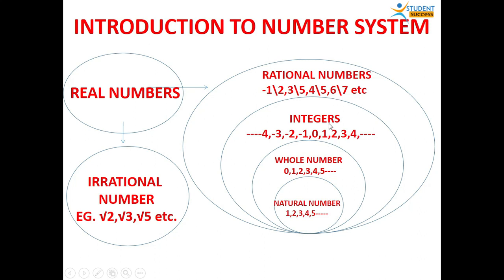The third category is integers. Integers are the collection of positive and negative numbers. This collection is bigger than whole numbers and natural numbers. So every natural number is an integer — for example, 2 is an integer. Every whole number is an integer — for example, 4 is an integer. However, minus 2 is not a whole number because minus 2 does not belong to the category of whole numbers.